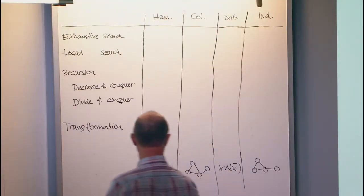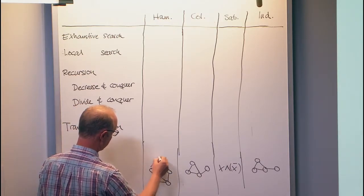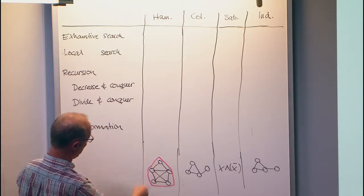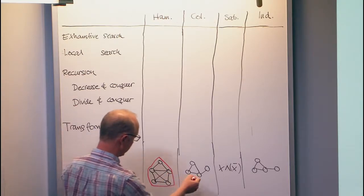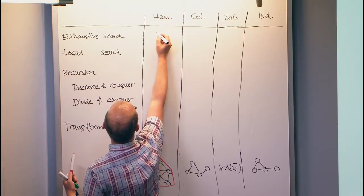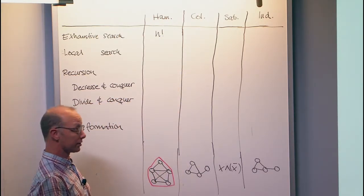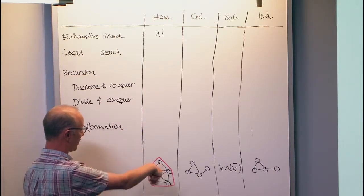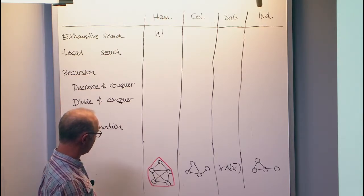Hamiltonian cycle is the question of visiting all the vertices in a graph exactly once. So here is one way of visiting all of them exactly once. Graph coloring — how fast can we do this? Well, naively, just from the definition, there are potentially n factorial, where n is the number of vertices in the graph, n factorial different ways of visiting these. At least one of them will find us the Hamiltonian cycle.